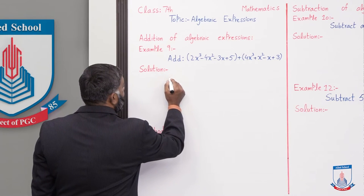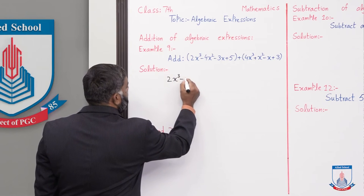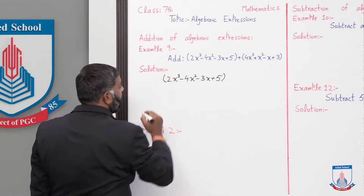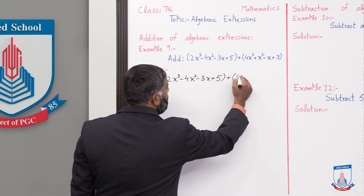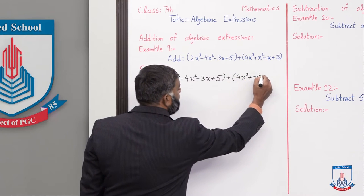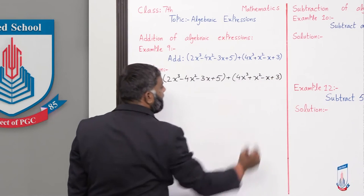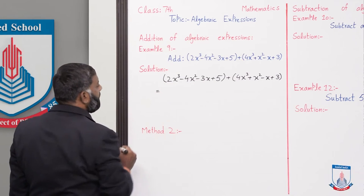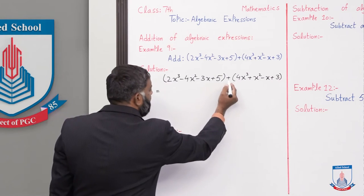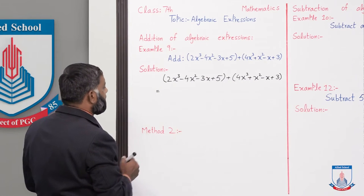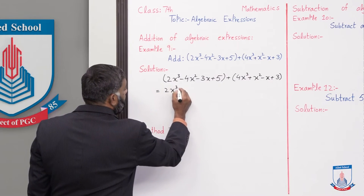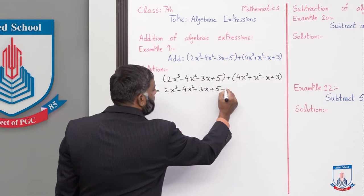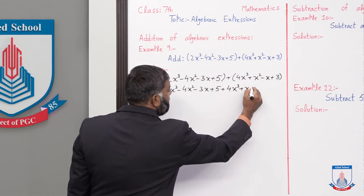Pehle method 1 se solve karunga. Is mein solve karne ke liye hum isko horizontally likhenge: (2x³ - 4x² - 3x + 5) yeh first expression hai, plus second expression (4x³ + x² - x + 3). Ab dono brackets ke darmiyaan mein plus ka sign hai, to sabse pehle hum brackets ko remove karenge. Chunki brackets se pehle sign positive hai, to andar ki tamam terms ke sign change nahi honge.